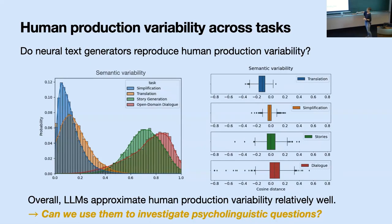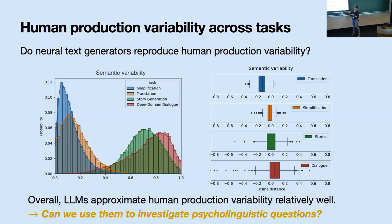This is not to say LLMs are great in what they generate. It's just that they seem to match human production variability relatively well. Given this somewhat positive result, I now want to go further into cognitive investigations and ask: can we use LLMs to investigate more classic psycholinguistic questions?